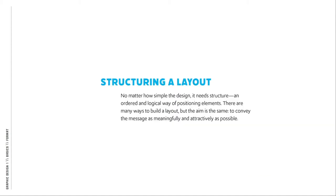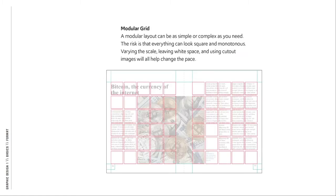White space or clear space can make a powerful statement, exuding confidence and authority — it is often associated with luxury. Think of the way some high-end restaurants present food arranged at the center of a huge white plate. The 'Rise and Shine' website applies this principle: a beautiful image of food, the logo, the tagline 'a good place to eat breakfast,' and very simple navigation. No matter how simple the design, it needs structure: an ordered and logical way of positioning elements.